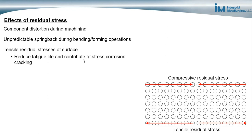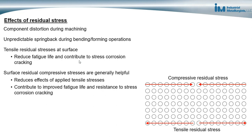Tensile residual stresses at the surface of a metal can reduce the metal's fatigue life and contribute to stress corrosion cracking. Alternatively, surface compressive residual stresses are generally beneficial — they improve fatigue life and resistance to stress corrosion cracking, and reduce the effects of applied tensile stresses that can cause fatigue and stress corrosion cracking.